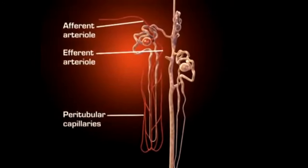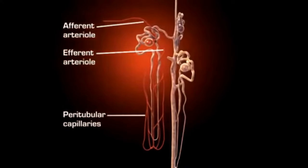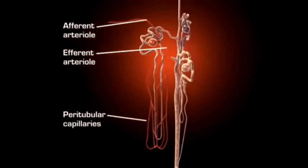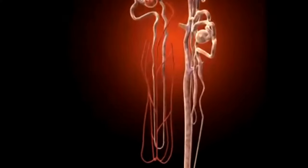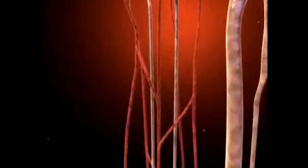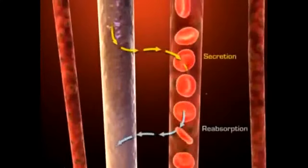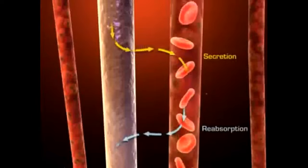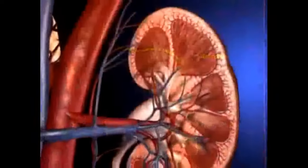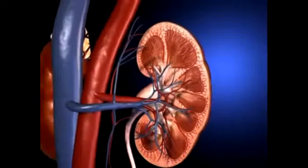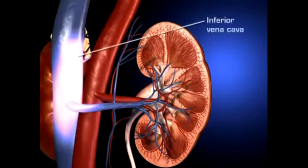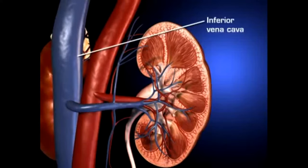The kidneys' venous blood, now filtered, flows from the glomerulus via the efferent arterioles into the peritubular capillary network, a low-pressure reabsorptive system surrounding all portions of the tubules. This arrangement permits rapid movement of solutes and water between the fluid in the tubular lumen and the blood in the capillaries. The peritubular capillaries rejoin to form venous channels by which blood leaves the kidneys and empties into the inferior vena cava.